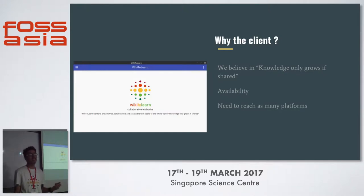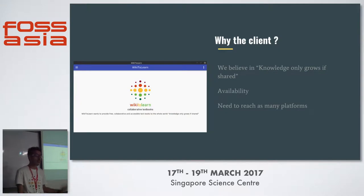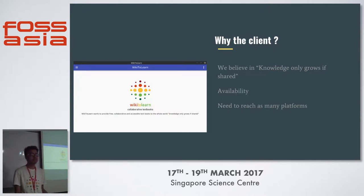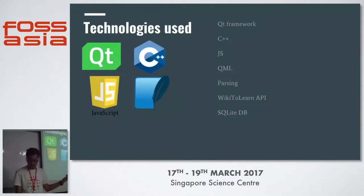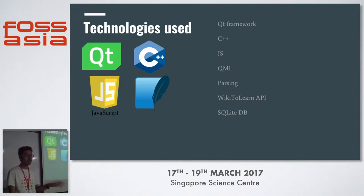So why was the client needed? We believe knowledge only grows if shared. The problem with Wiki2Learn was that it was only available as a website — there was no application for Android devices or any other platform. So in order to reach as many platforms as possible, we needed a cross-platform client. We decided to use the Qt framework. C++ is used for the backend and performs all the logic for the client, like downloading images, maintaining connection with the database, and querying the API.